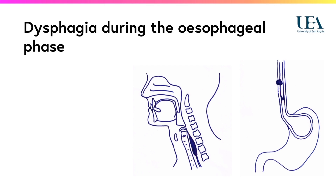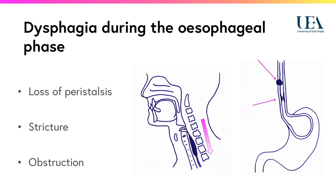During the oesophageal phase, loss of peristalsis, a muscular stricture or an obstruction, for example by a tumour, will result in slowing or failure of transport of the bolus to the stomach. If this is very severe, it will result in regurgitation of material into the pharynx, carrying the risk of aspiration.